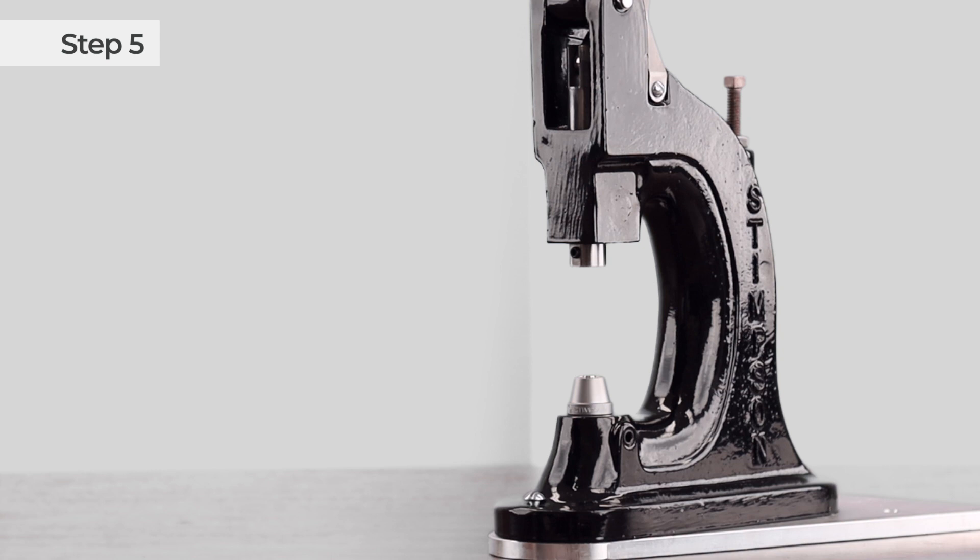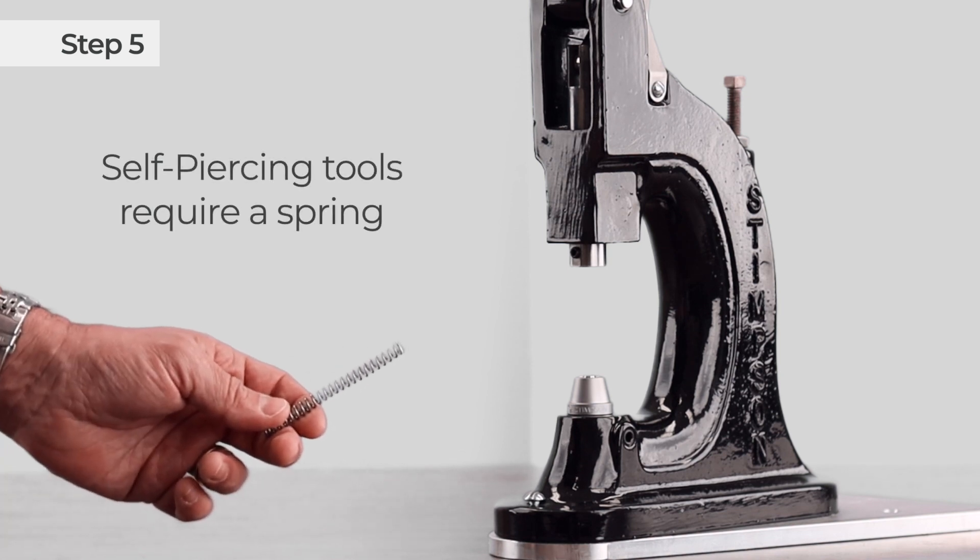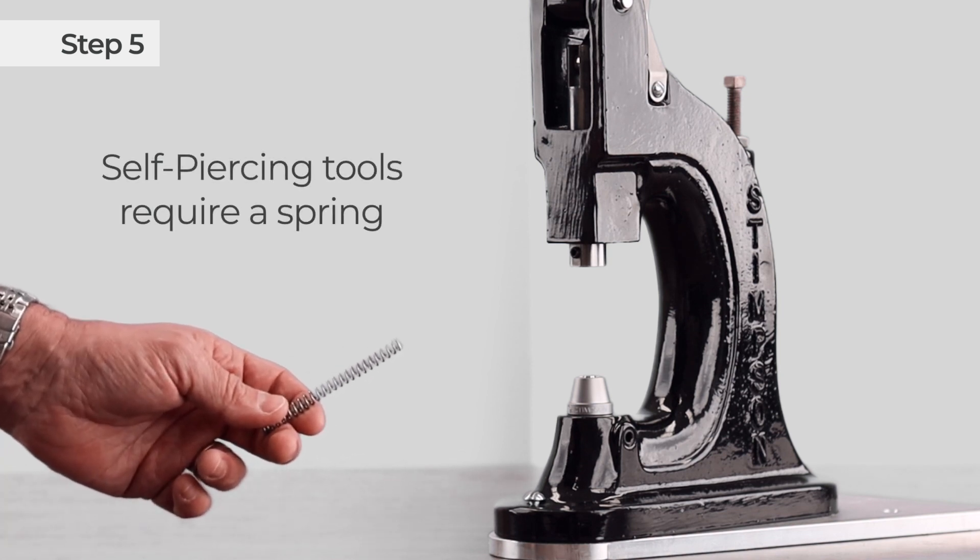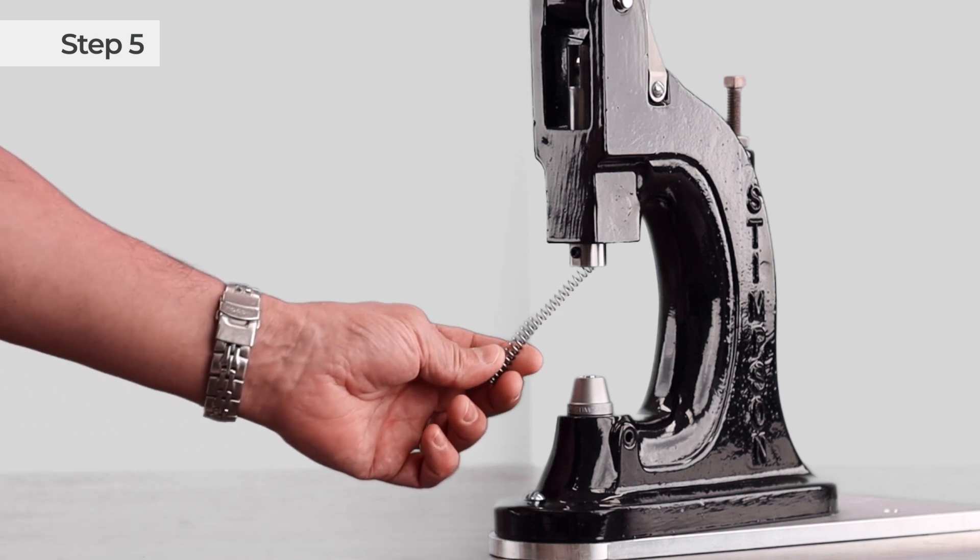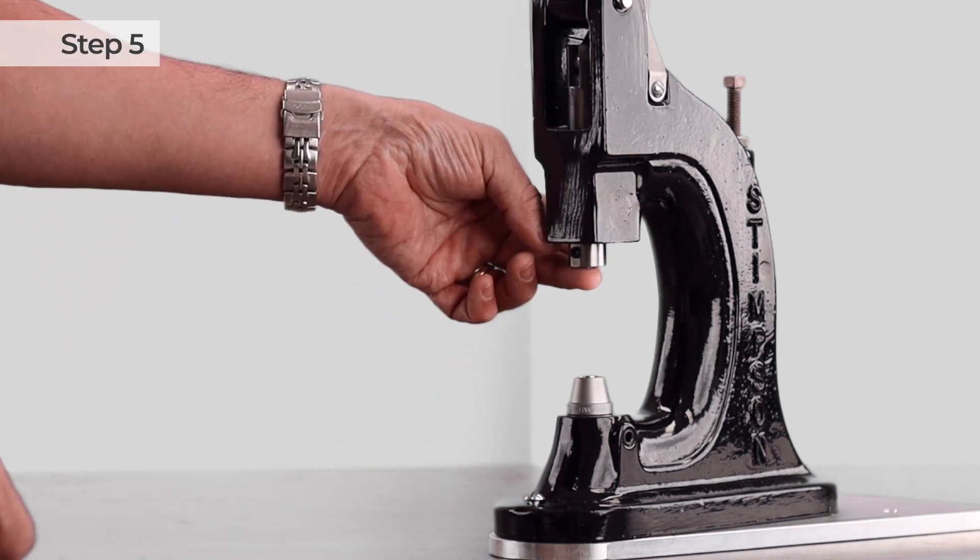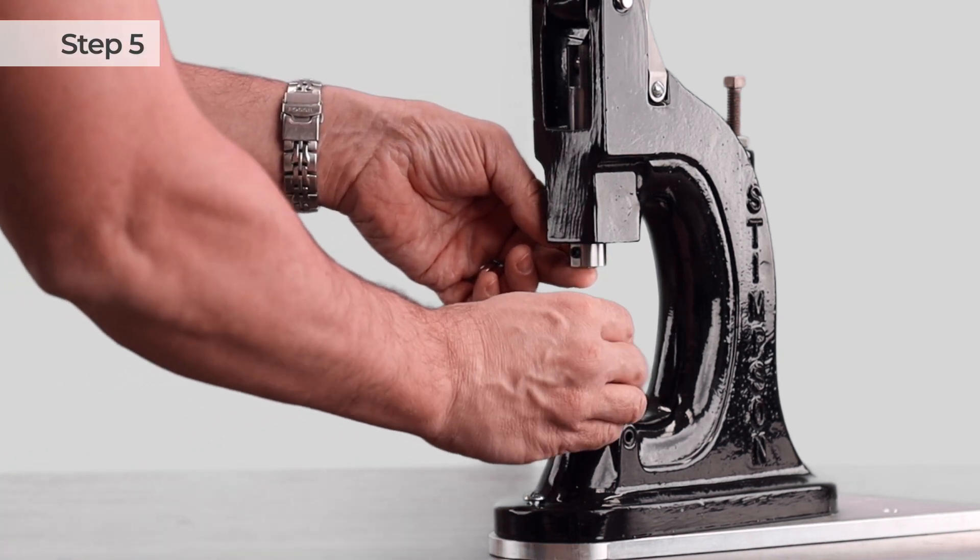Now you can put in the top tools. In this case, I'm putting in tools for a number zero self-piercing grommet. Self-piercing tools require a spring to help the grommet stay on the top tool. If you're setting something other than self-piercing grommets, you will not need a spring, but in this case I need it. So I'll insert the spring here, then place the top set onto the bottom tool.